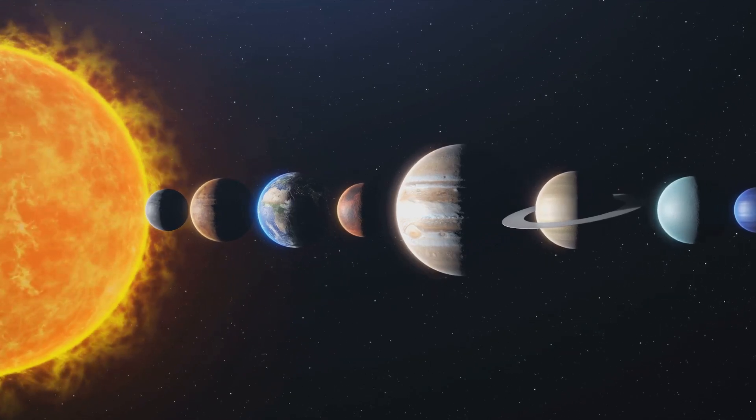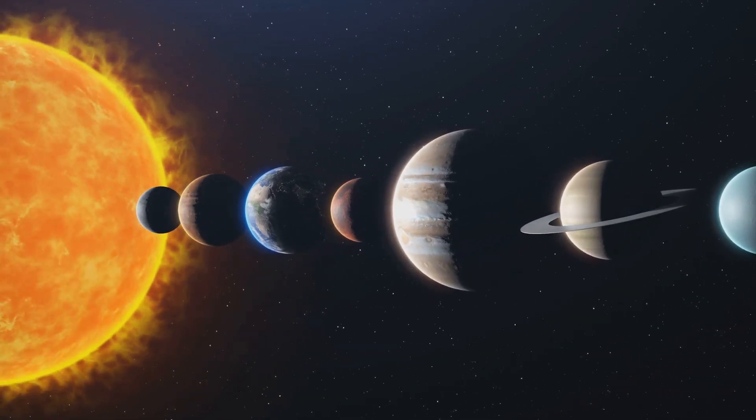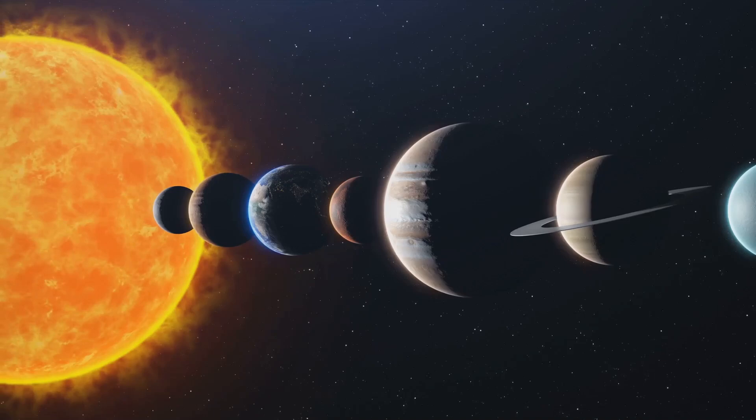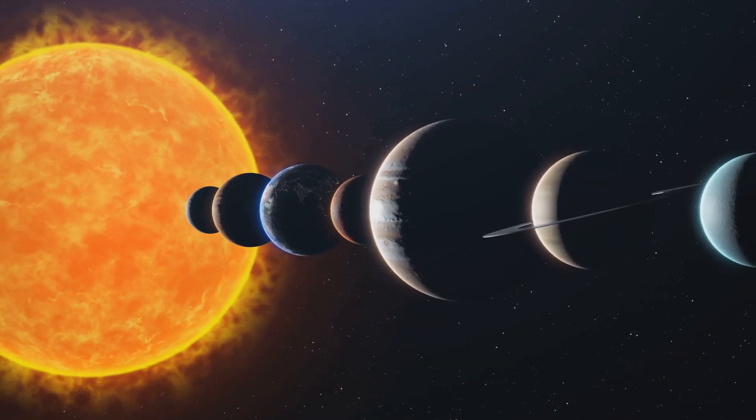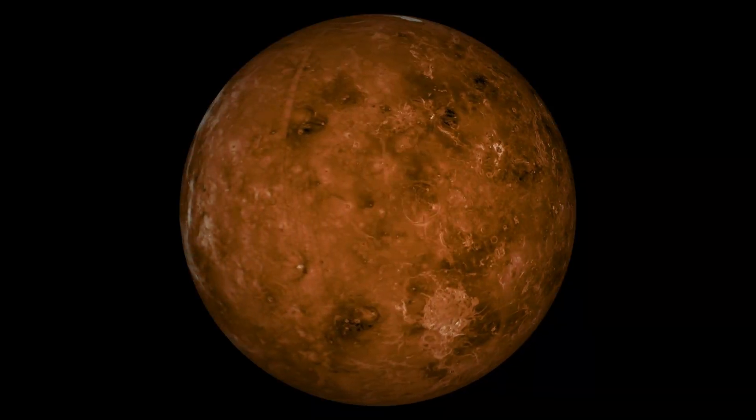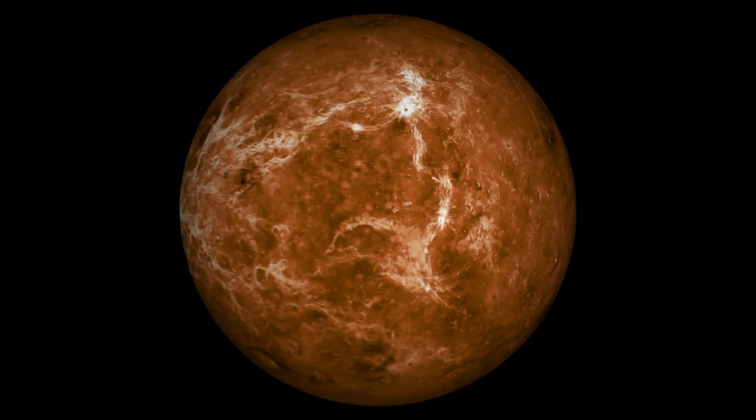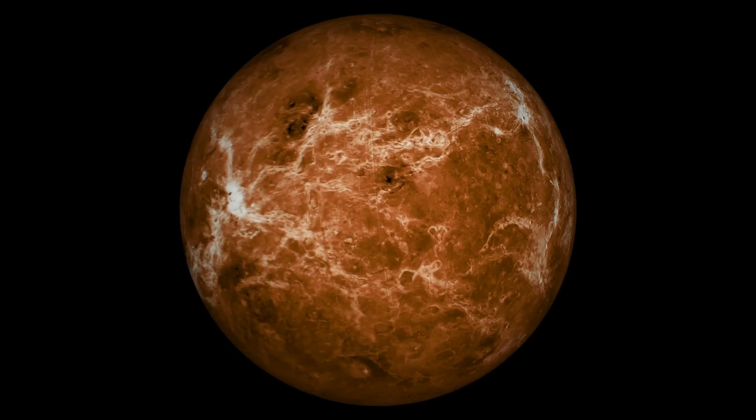To illustrate, Venus takes approximately 243 Earth days to perform a full spin on its axis, which is considered a day on Venus. Yet it takes only around 225 Earth days for it to orbit the Sun and complete its year. This unusual event is due to Venus's sluggish rotation speed in conjunction with its relatively close distance to the Sun.